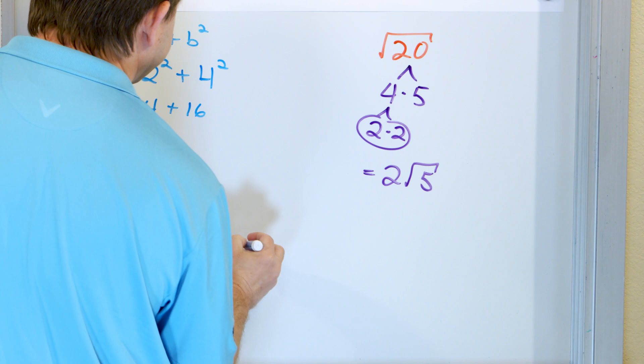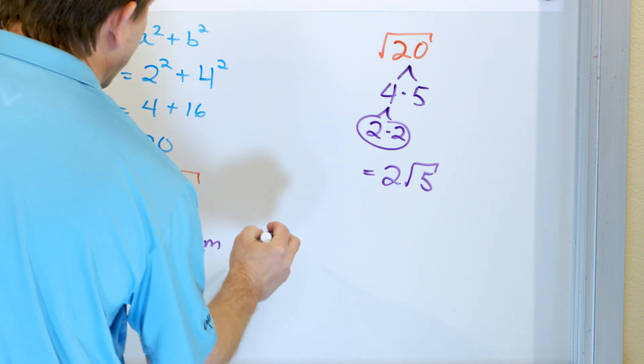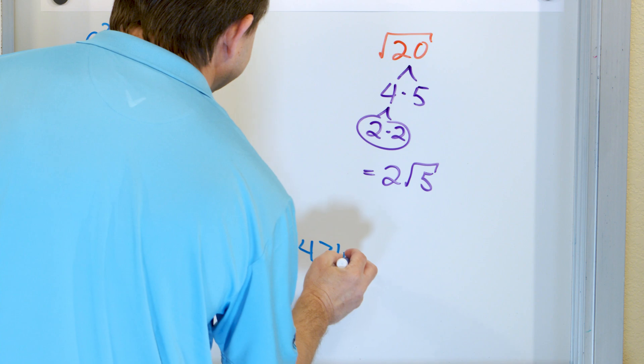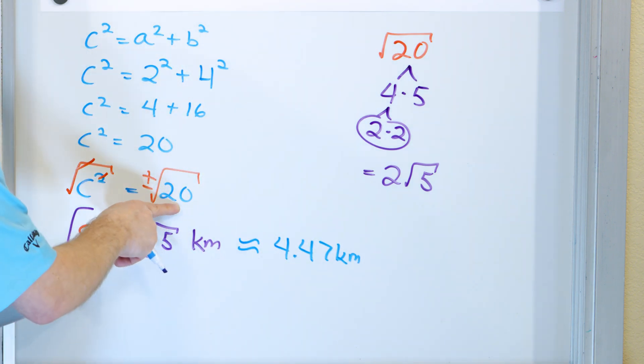And we can also write that in terms of a decimal, and that works out to 4.47 kilometers. Of course, this is a rounded number. If you take the square root of 20, you'll get this. If you take the square root of 5 and then multiply it by 2, you'll also get the same thing.